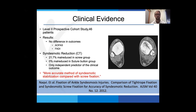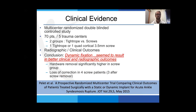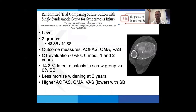Multiple level one evidence studies have compared syndesmotic screws versus tightrope. One study of 46 patients showed no difference in outcome scores, but postoperative CT scans revealed 0% malreduction in the tightrope group versus 21% in the screw group. Another study of 70 patients across five trauma centers showed more hardware removal in screw patients and loss of correction in four screw patients — three after screw removal — suggesting scar tissue may not be sufficient, especially with early removal. Another study shows less mortise widening two years after tightrope, which is ultimately the goal.